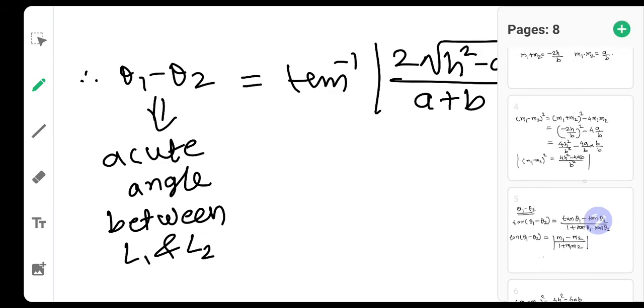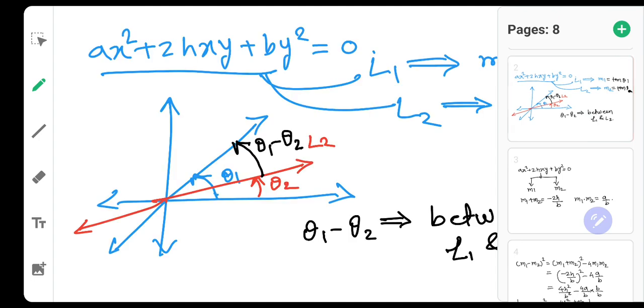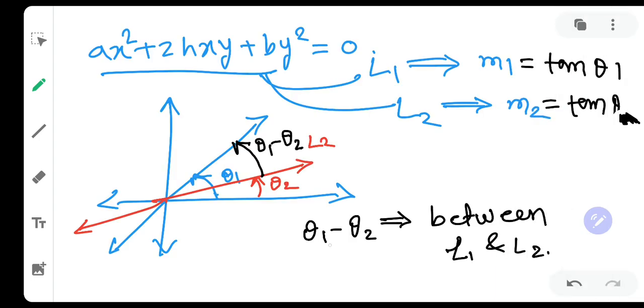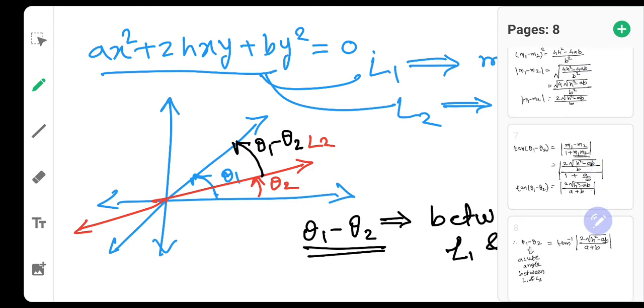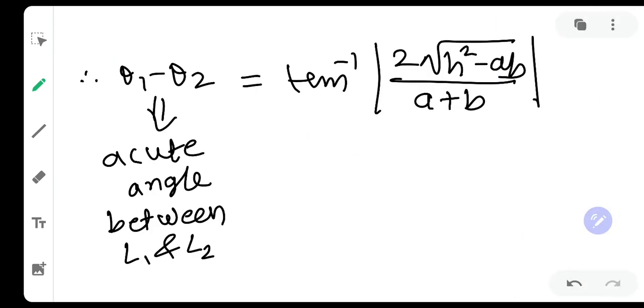And this is how we have proved this theorem very simply. We have calculated the angle θ1 - θ2 in terms of the slopes, which is nothing but 2√(H² - AB)/(A + B).